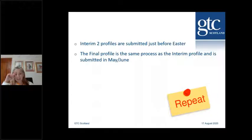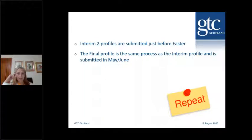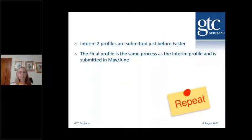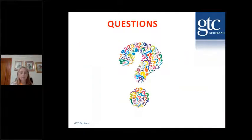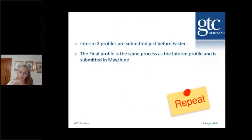The interim 2 profiles, for those who are cause for concern or unsatisfactory, are submitted just before Easter. Those probationers then go on to the final profile, the same as other probationers. The final profile follows the same process as the interim profile — slightly different number of observations: if you've done five before Christmas, there are only four to do from January onwards. It is submitted in May or June, with the date shared by the probation manager.